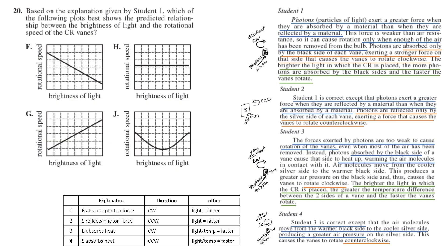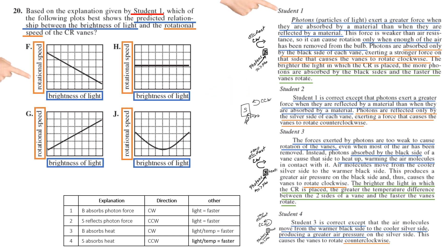Number 20, based on the explanation by student one, which of the following plots shows the predictive relationship between the brightness of light, that's the x-axis, and the rotational speed. We know from reading and understanding that more light equals faster rotation. We can see it there. We can see it in our chart. So more light, faster rotation, choice G. And that's a fast question if you understood the reading.